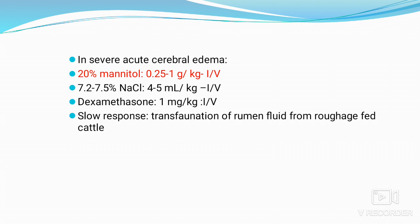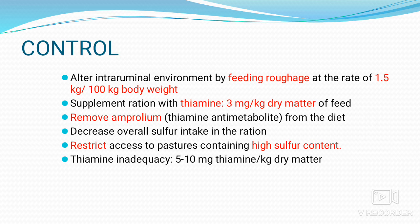For slow response cases, collect rumen fluid from animals fed roughage and administer it to the affected animal. Control roughage feeding at the rate of 1.5 kg per 100 kg body weight. Thiamine can be included in the diet at 3 mg/kg dry matter. Remove amprolium from the diet and decrease overall sulfate intake in the ration. Restrict access to pastures containing high sulfur content. For thiamine inadequacy, give 5–10 mg thiamine per kg dry matter.